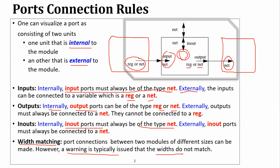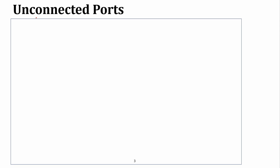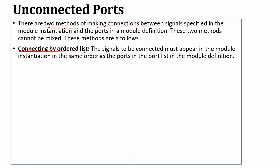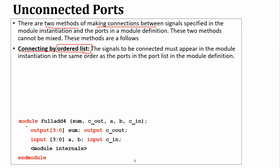There is a warning generated which means that the width of the two ports will not match. In addition, for unconnected ports we have two methods: the ordered list, which we have seen in previous examples and in the previous video tutorial which is in the description, where we ordered the list through the test bench and our design module connected to our design.